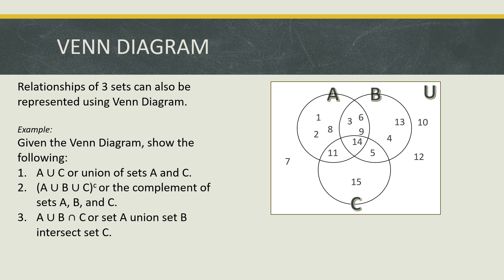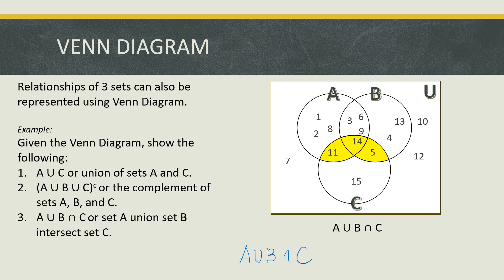How about number three: A union B, intersect C? First, we get the union of A and B. Then we only need to get the elements that intersect with set C. Those are 11, 14, and 5. Therefore, A union B, intersect C, has elements 5, 11, and 14 in ascending order.